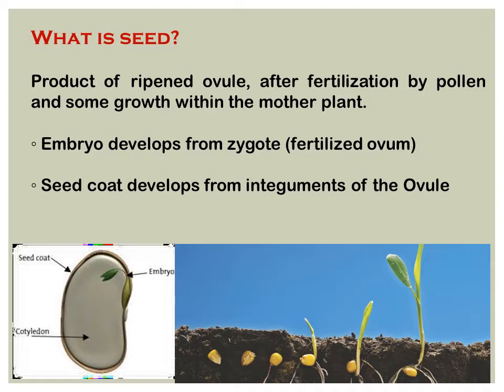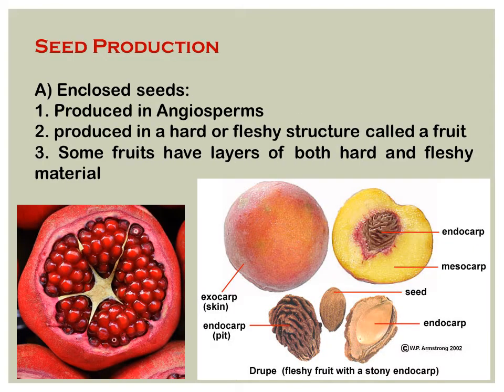So two things are there: the embryo develops from the zygote, and the seed coat develops from the integuments of the ovule. Now the difference between seed and grain — grains are used for consumption purposes, while seeds are used for sowing purposes. Seeds have a protective layering, maybe a papery layer, maybe a seed coat.